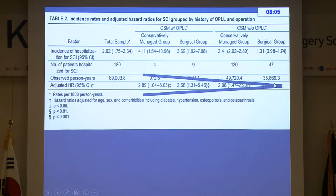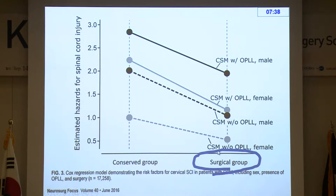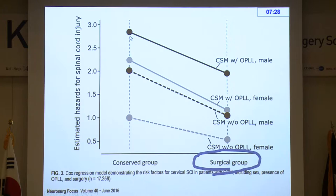This comparison table demonstrates that using patients with cervical spondylotic myelopathy without OPLL as a reference, patients with OPLL causing CSM who had no surgery had almost three times the risk of subsequent spinal cord injury. Female patients with CSM and OPLL had the lowest rate if treated surgically, while male patients with CSM caused by OPLL who had no surgery had at least three times the risk. Surgery reduces subsequent spinal cord injury risk by at least 50%.